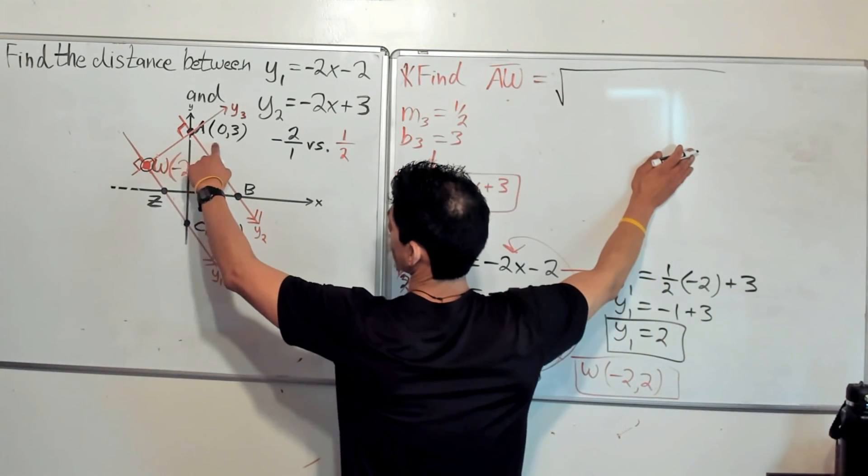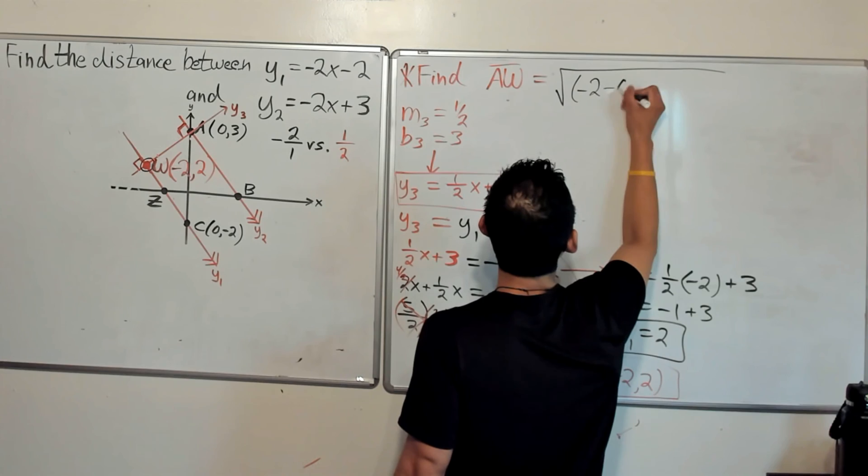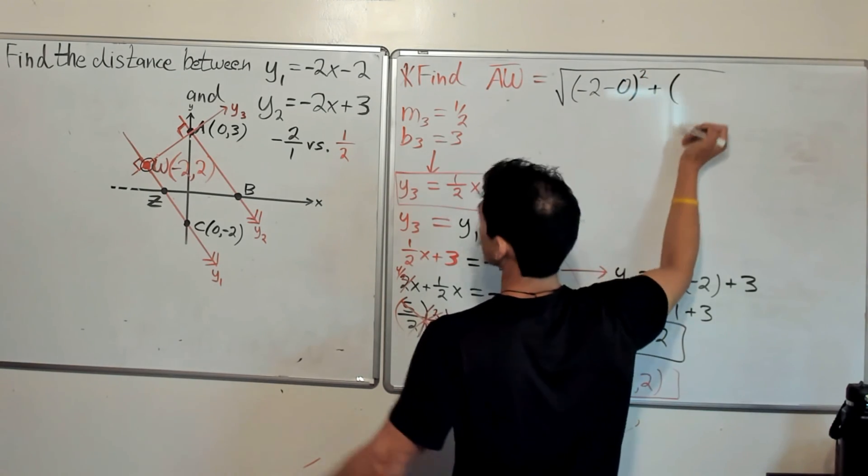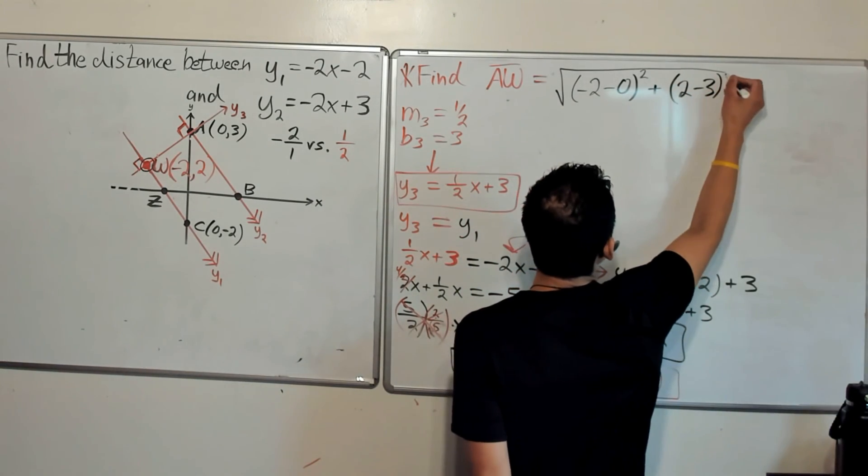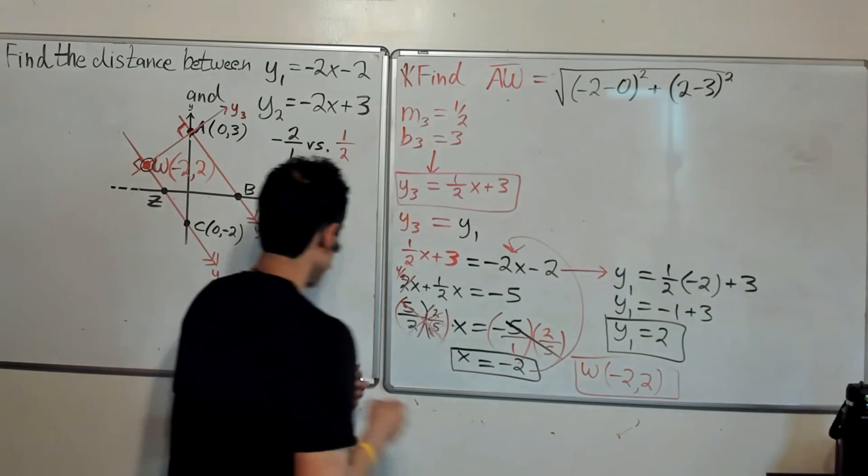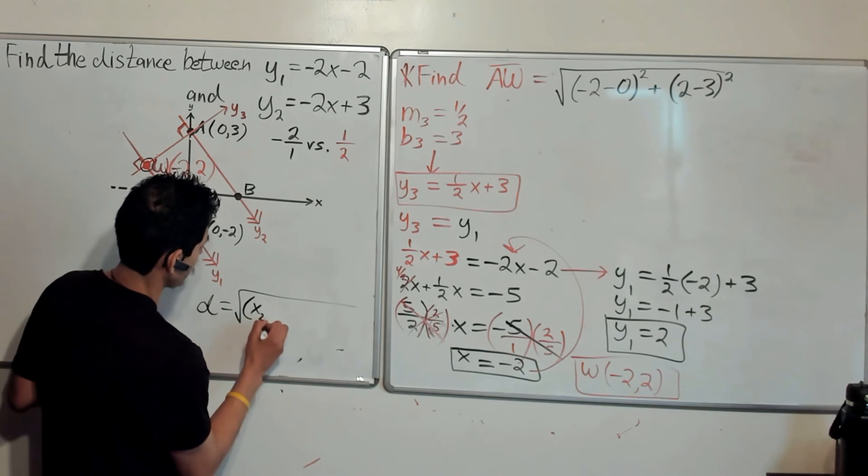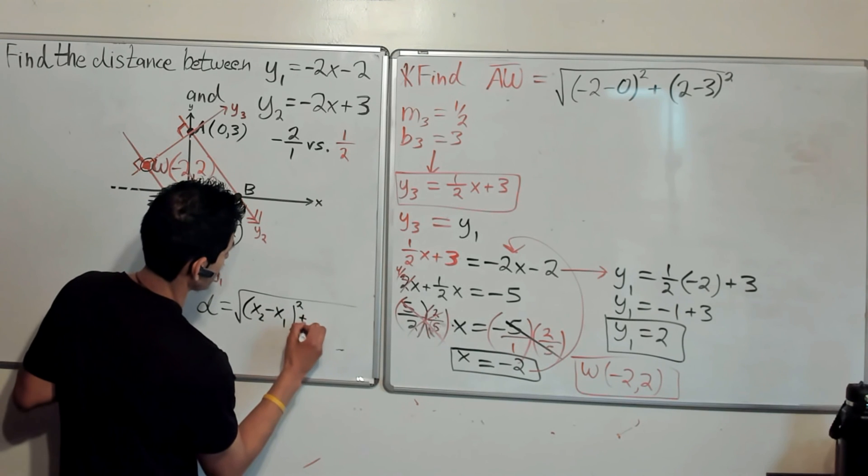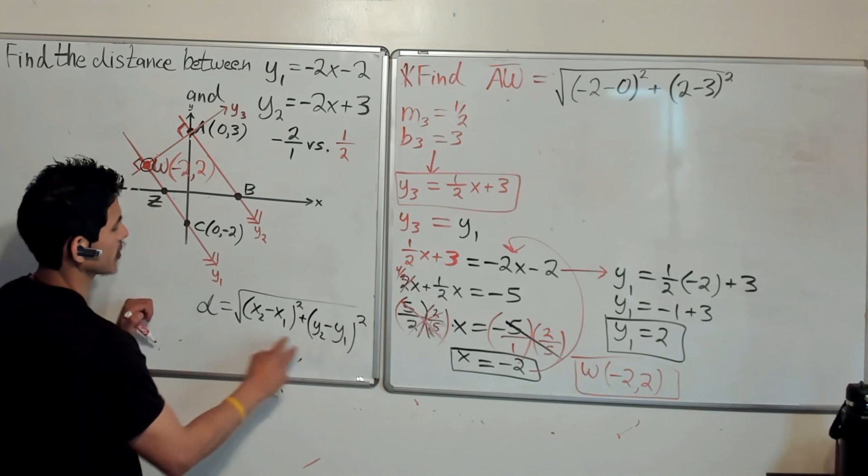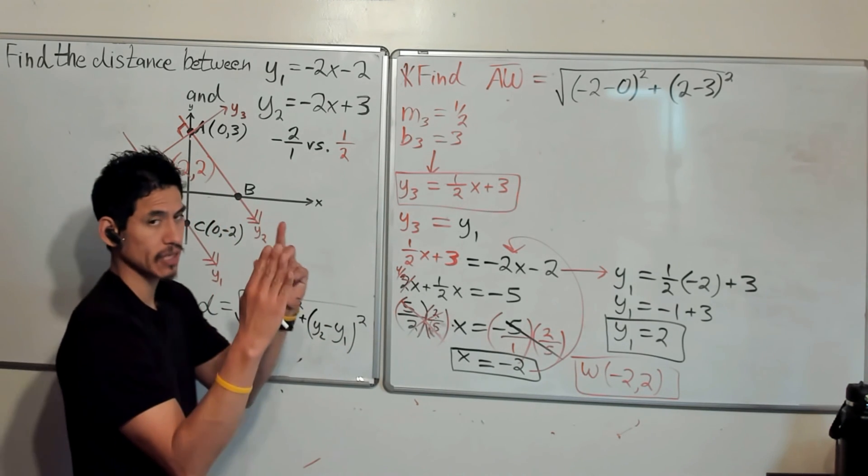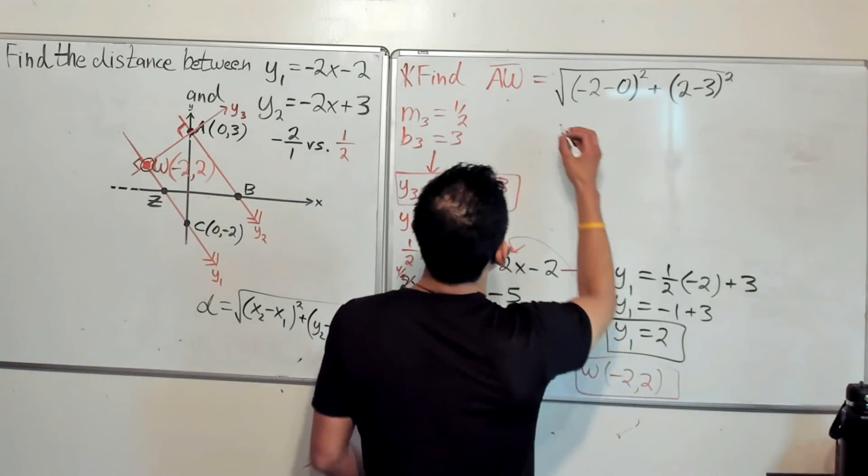So we're going to go negative 2 minus 0 squared plus 2 minus 3 squared. Make sure you know the distance formula, let me just write it again over here. Remember the square root of the differences x2 minus x1 squared plus y2 minus y1 squared. Doesn't matter which one you call y2 or x2, just make sure the x2's and y2's match, and the x1 and y1 go together.